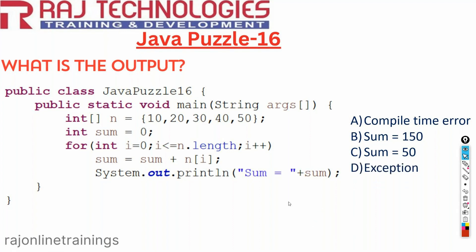If you add these values — 10 plus 20 plus 30 plus 40 plus 50 — the sum is 150. So we might think the answer is sum as 150. Now let us understand the correct output of this program.